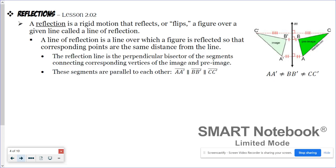Reflections — we think of those as a flip. A key property is that the reflection line is the perpendicular bisector of the segments connecting the corresponding vertices of the image and the pre-image.